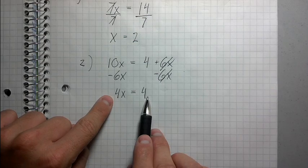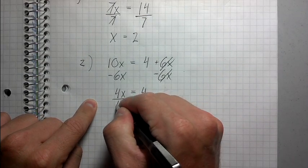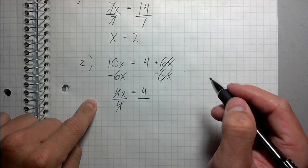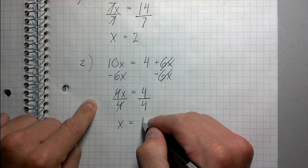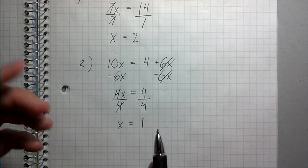Now I have 4x equals 4. Just like we did before, instead of dividing by 7, we're going to divide by 4 to get rid of the times 4. 4 over 4 equals 1. So x equals 1. Perfect, we're done.